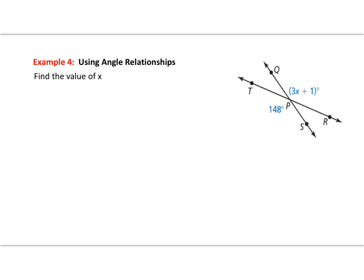For this example, we use the relationship of vertical angles to solve for x. We look at two intersecting lines and conclude the angles across from each other are vertical angles. Since angle TPS and angle QPR are vertical angles, their measures are equal. Substituting 3x + 1 for the measure of angle QPR and 148 degrees for angle TPS, and solving algebraically, we get x equals 49.